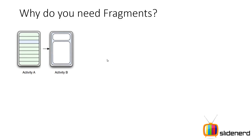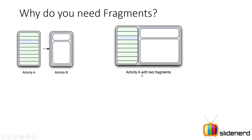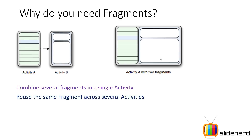So why do you need fragments? Instead of Activity A navigating to Activity B, the modern style is Activity A with two fragments. You can combine several fragments in a single activity — this is one of the things you'd be expected to do in modern apps. You can also reuse the same fragment across several activities, since each fragment has its own layout, separate just like an activity. And most importantly, fragments help you make better use of space on tablets, where activities can feel blank with extra screen space. Using fragments you can fill that available screen space much more effectively.